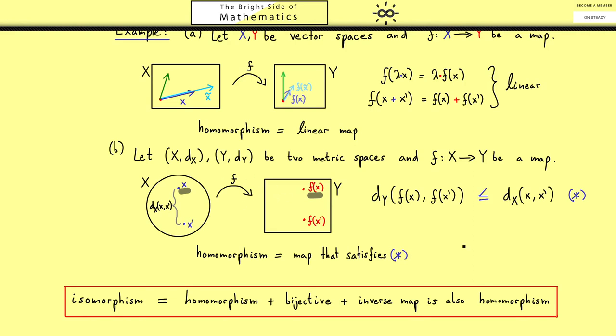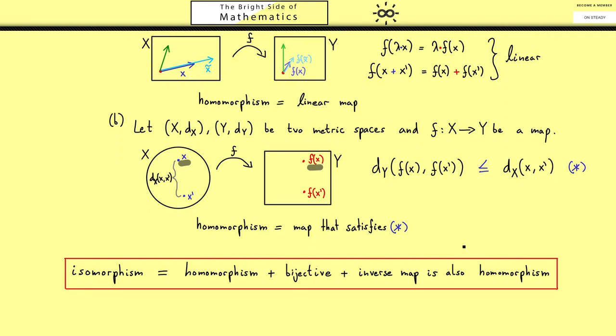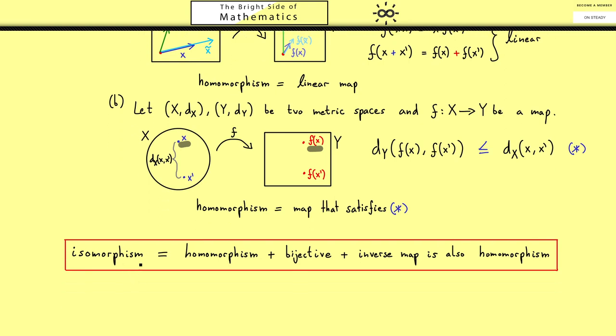Of course this is a general concept you might have already known, but we use this a lot in functional analysis. However, please never forget always to check in which context isomorphism is used when you see it. For us it will be now very important to look at isomorphisms when we have the structure of Banach spaces.